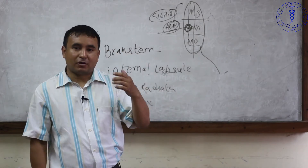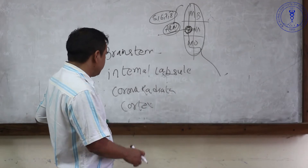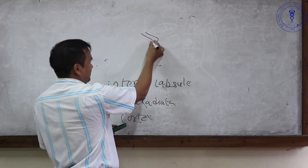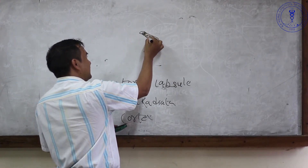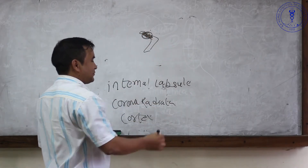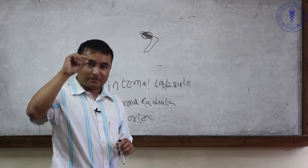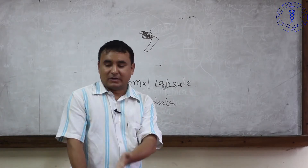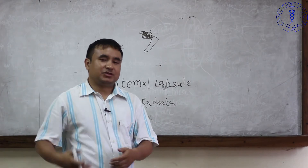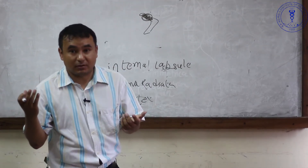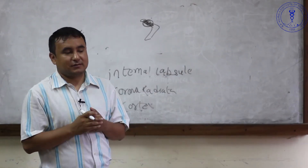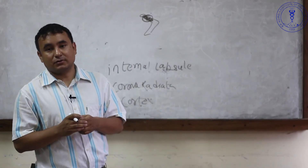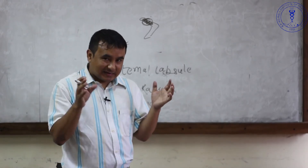If there is cranial nerve involvement — which is typically a lower motor neuron type — along with hemiparesis, think about brainstem involvement. Regarding the internal capsule, it is an area with densely packed axons, so even a small lesion has a huge effect. You get dense hemiplegia — zero out of five power in both the upper and lower limbs, possibly with facial involvement. This is a classical feature of an internal capsule lacunar infarct.